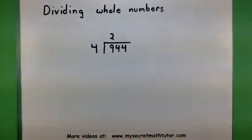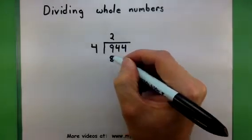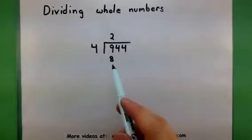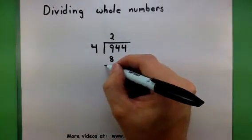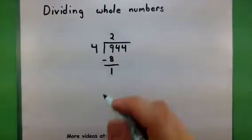2 times 4 is 8, and sure enough, that will work out. When I find a number that's less than the 9 like this 8, I want to go ahead and subtract it away. I'll get a result of 1.